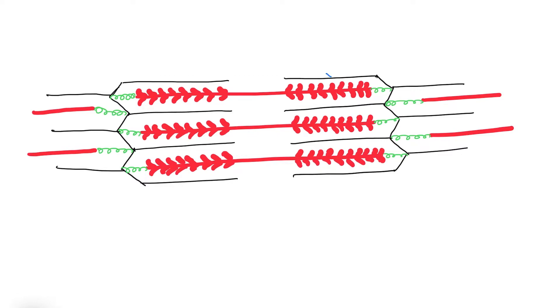Let's label it. The thin lines are actin or the thin filaments. The thick lines are myosin or the thick filaments. And the connections drawn in green are called titin.